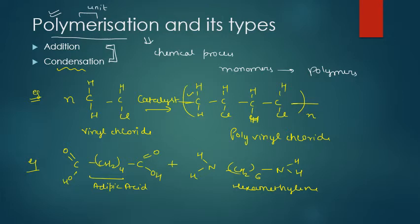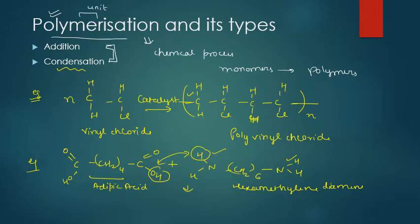When you add these two monomers, you will get a polymer. You can see there is an OH group on one side and an H on the other. If you remove these two, H2O will be a byproduct — water is removed and the monomers are joined with a new bond.